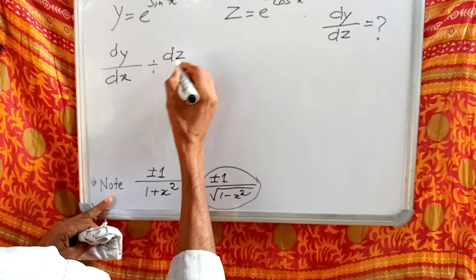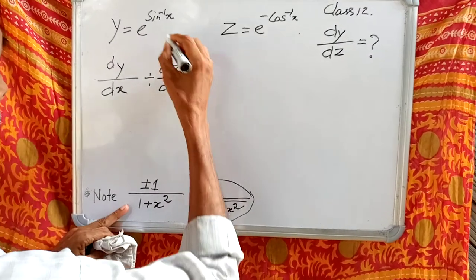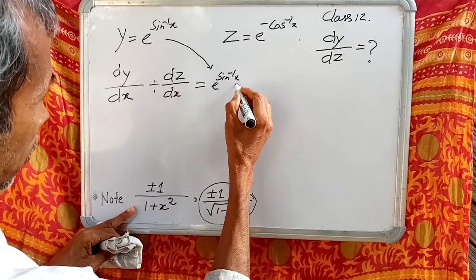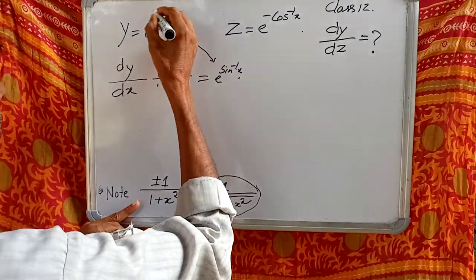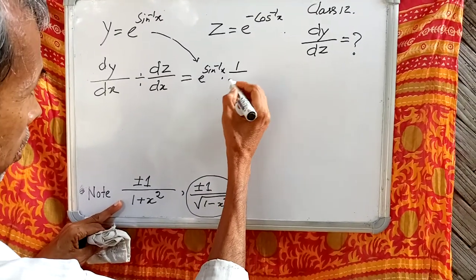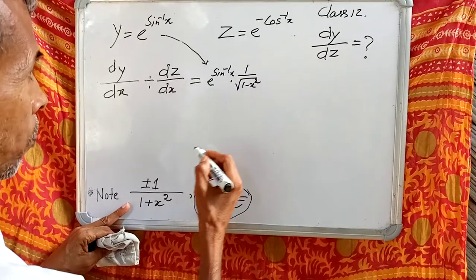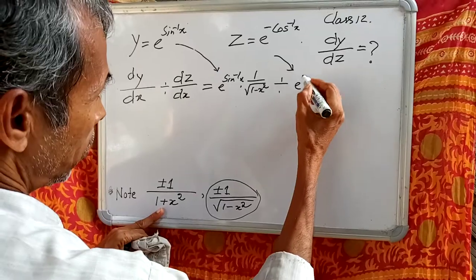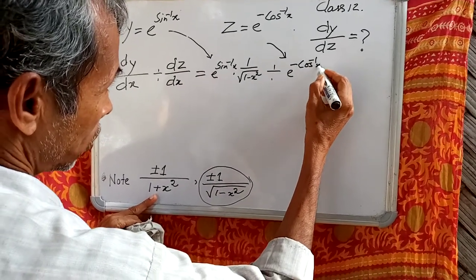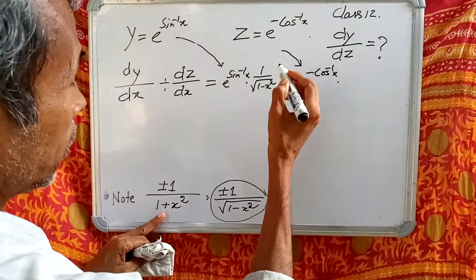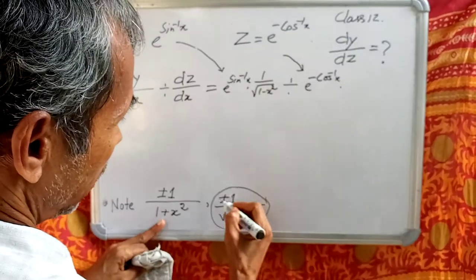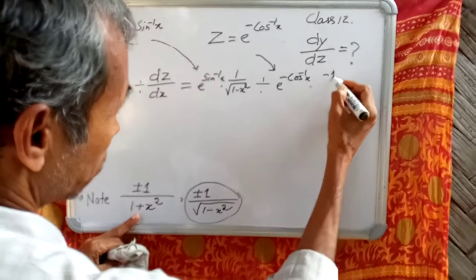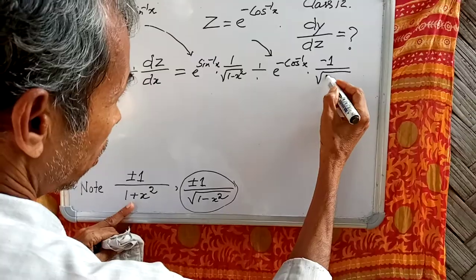Now, dy by dz equals (dy/dx) divided by (dz/dx). dy/dx equals e to the power sin inverse x, multiplied by the derivative of sin inverse x, which is 1 by root over 1 minus x squared. And dz/dx equals e to the power minus cos inverse x, multiplied by the derivative of cos inverse x, which is minus 1 by root over 1 minus x squared.